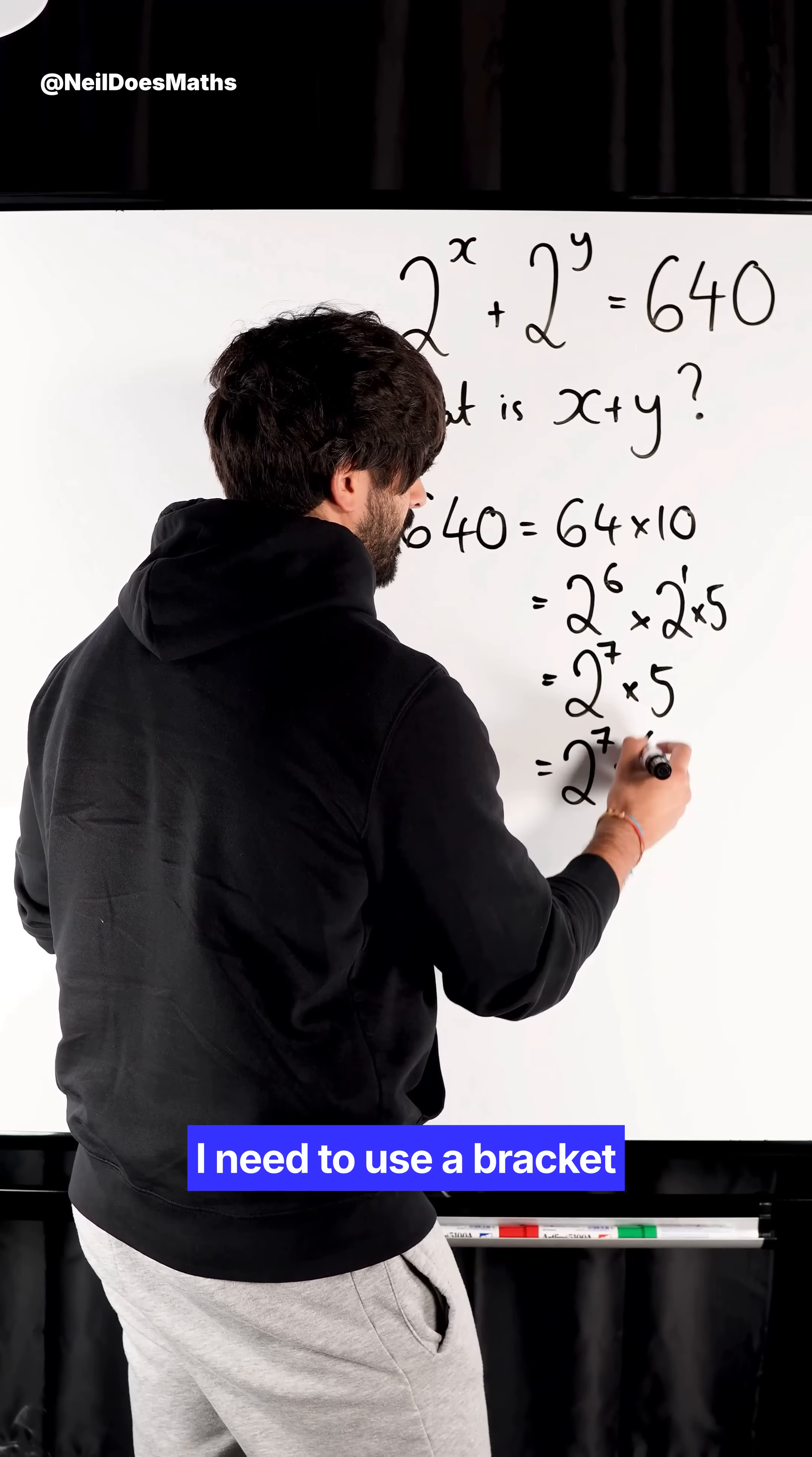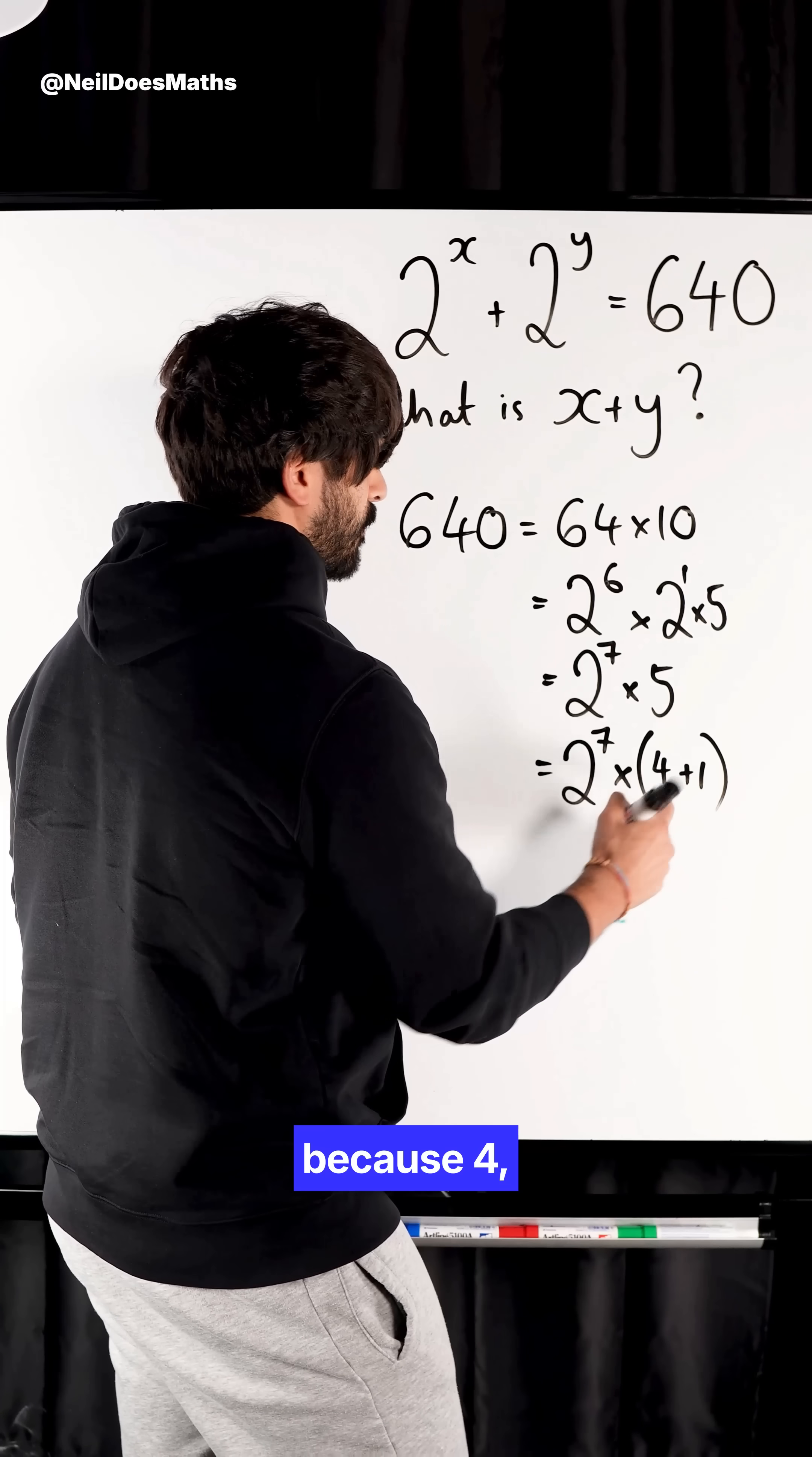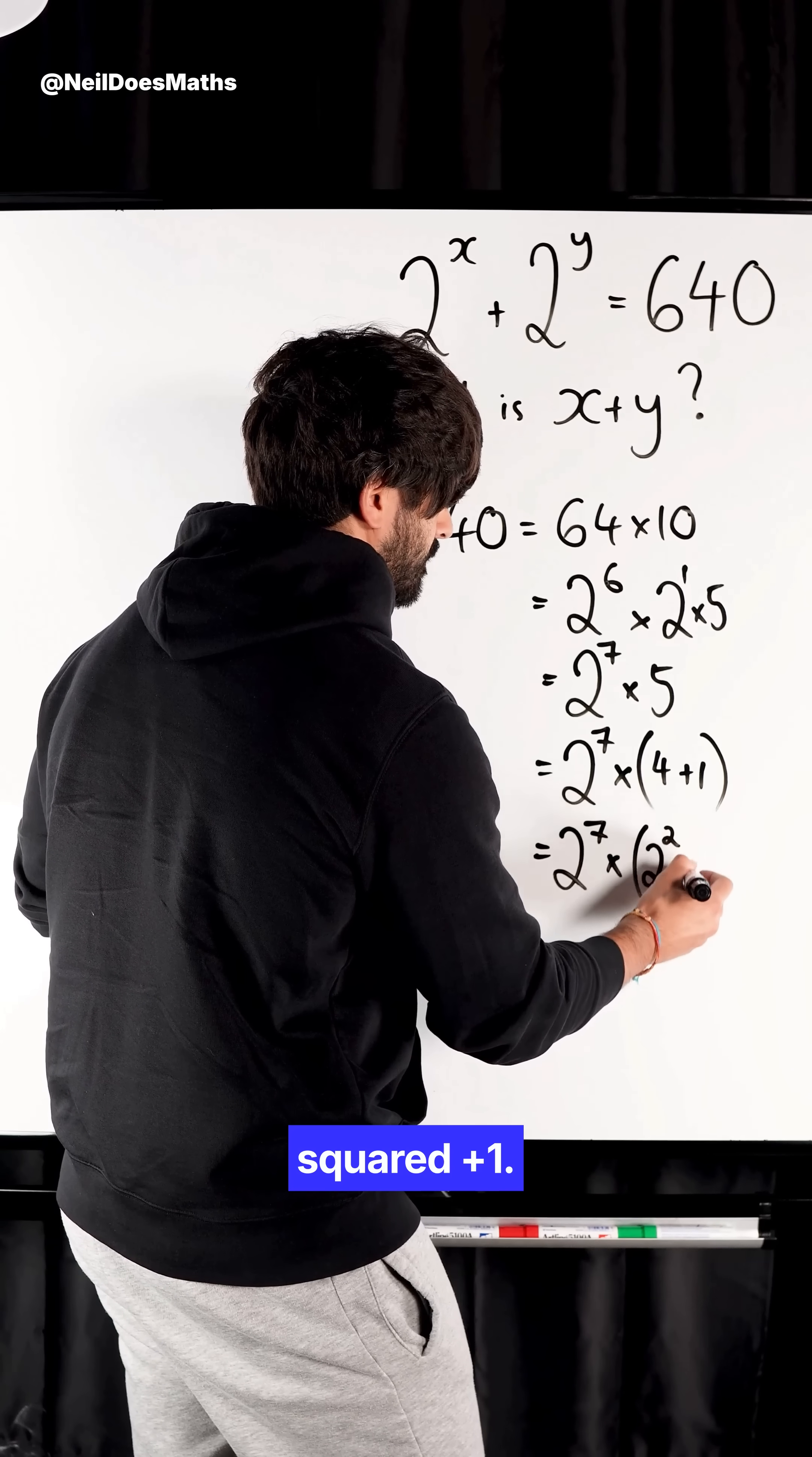So I have 2 to the power of 7 times 5. I need to use a bracket here: 4 plus 1. Because 4, like I said, is 2 squared plus 1.